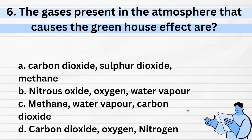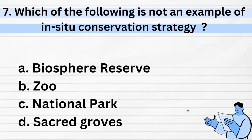Which one of the following is NOT an example of in-situ conservation strategy? In-situ conservation refers to conservation in natural habitat, while ex-situ is man-made. Options: biosphere reserve; zoo; national park; wildlife sanctuary. The answer is zoo — it is an ex-situ (man-made) conservation strategy, not in-situ.